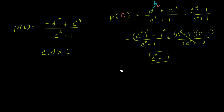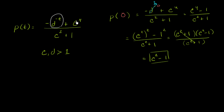So the particle is at c squared minus 1 when time equals 0. But what happens after that? Does the position keep increasing, keep decreasing, or does it swap around? To answer that question, we really just have to focus on the term negative d to the negative t — this is the only part that t is driving. All the other terms remain fixed as we go through time.